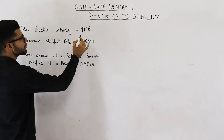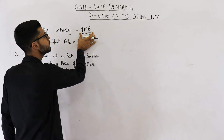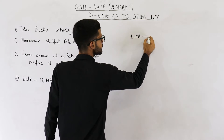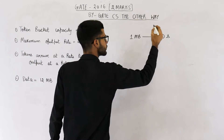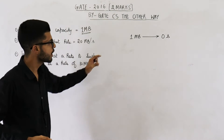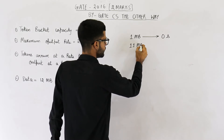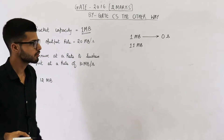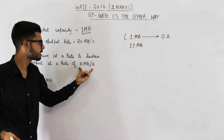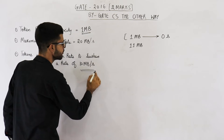Students think that bucket capacity is 1 MB and initially bucket is full of tokens. So first 1 MB of data can be sent in no time using all of these tokens. So 1 MB is sent instantaneously in 0 seconds. Now you have used all the tokens present in the bucket. Out of 12 MB, you have sent 1 MB, so 11 MB is remaining. These 11 MBs of data require tokens, but you have used all the tokens. So these 11 MBs can be sent at 10 MB per second.